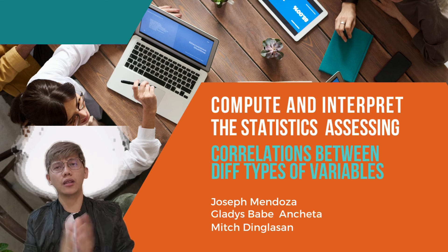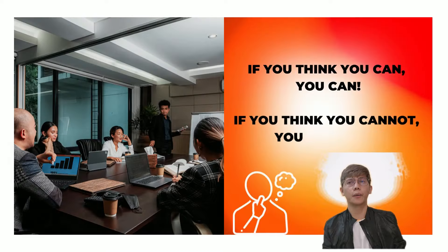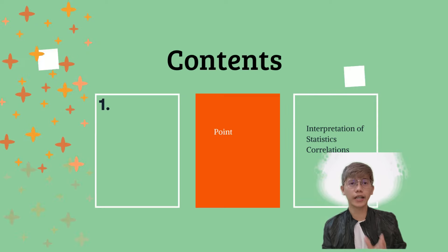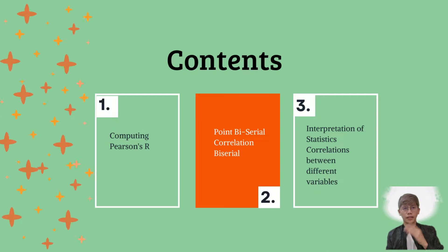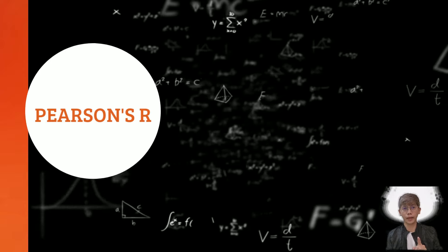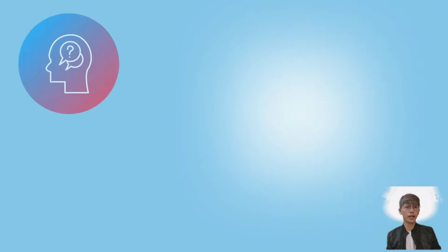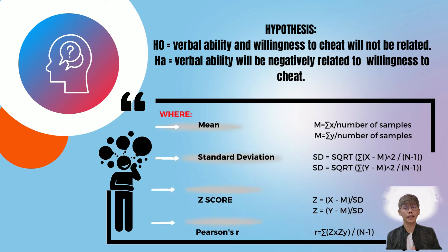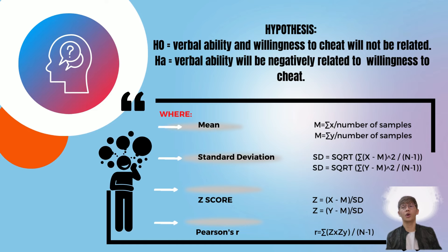Now let's discuss how to compute Pearson's R. First, we identify the hypotheses. The null hypothesis states that verbal ability and willingness to cheat will not be related. The alternative hypothesis states that verbal ability will be negatively related to willingness to cheat. To compute Pearson's R, we need the mean, standard deviation, and z-scores from previous formulas. In this dataset of 20 samples, verbal ability is X and willingness to cheat is Y.